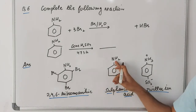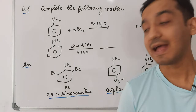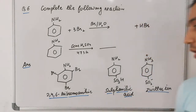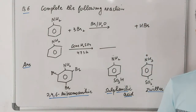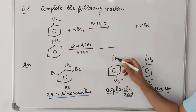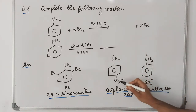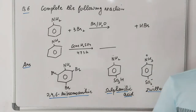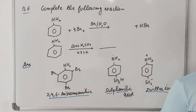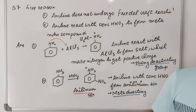In sulfanilic acid, you have NH₂ on one side and SO₃H at the para position. On one side there is a base and on the other side an acid. The acid can donate H⁺ to form NH₃⁺, and can lose H⁺ to form SO₃⁻. This ion, which is both acidic and basic, is called a zwitterion.